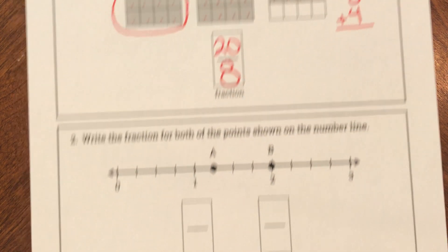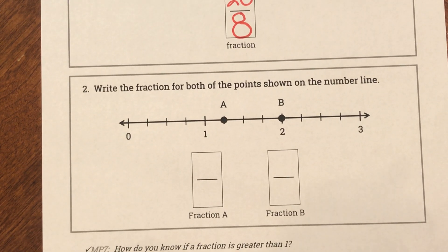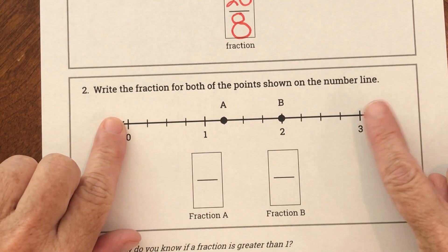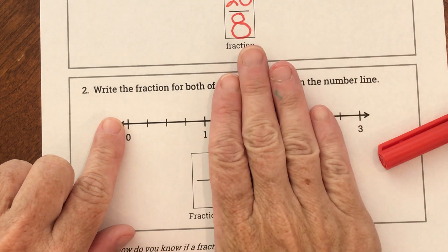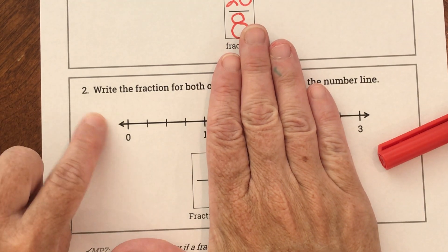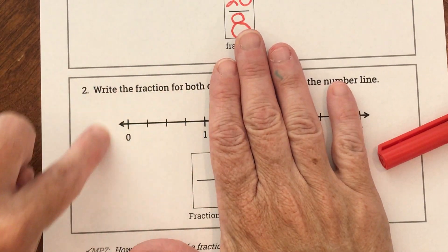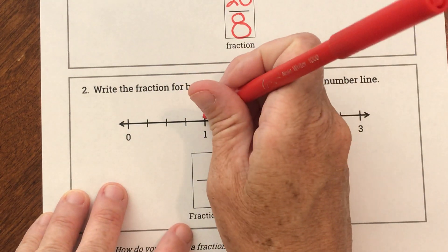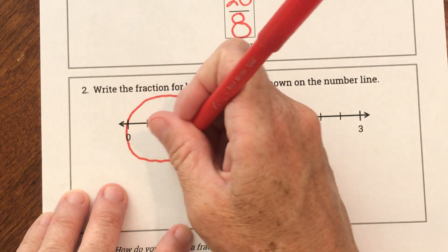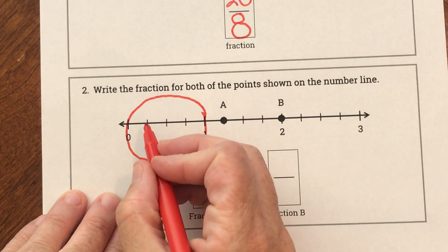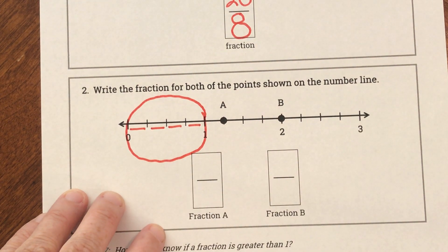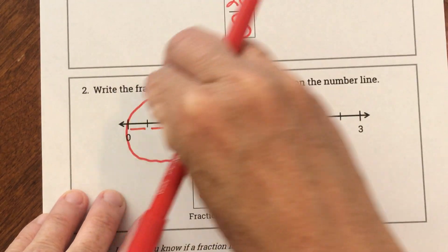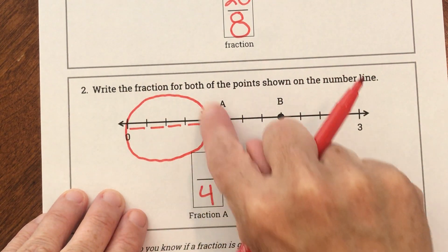Let's look at this one — it's a little bit different. This is a number line that we had been working on. It says write the fraction for both points on the number line. Notice this number line goes from zero to three — our other number lines were only going zero to one. Just like the problem above, we only want to look at one whole. How many parts was one whole cut into? One, two, three, four. That tells me my denominator is four, because each whole was cut into four pieces and we only want to know one whole.